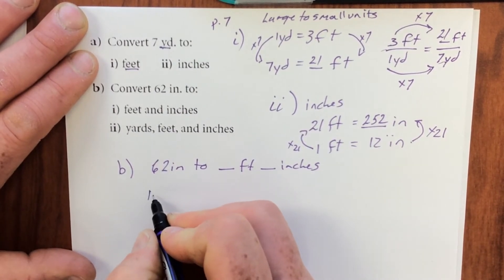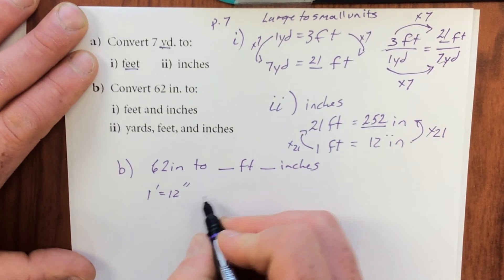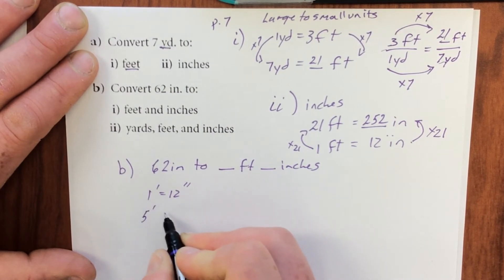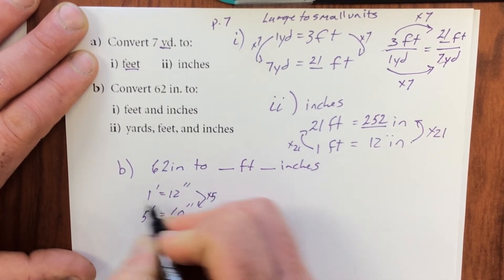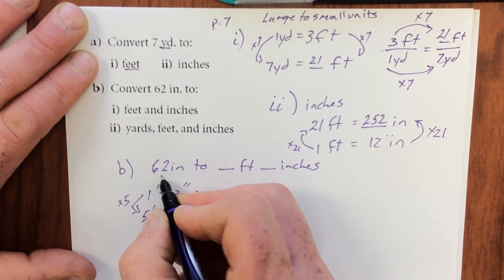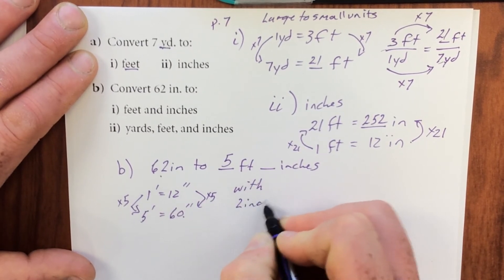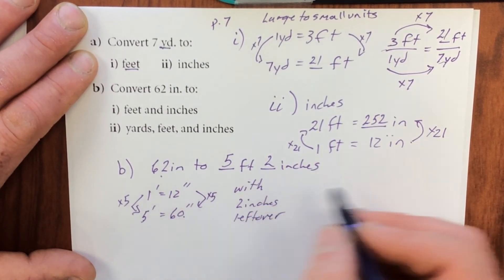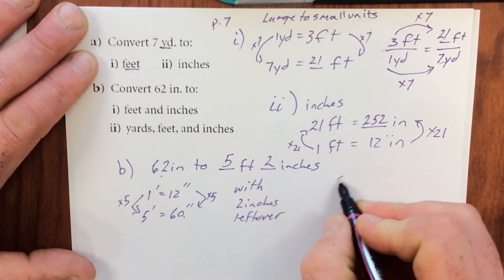I know with one foot equaling 12 inches, that tells me that I can tell right away from this the largest number of feet that would work. Five feet is equal to 60 inches. So that means five feet would be in 60 inches with two inches left over. That's my answer. Nice and easy. But I could also choose to do it this way, called the calculator.